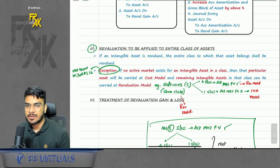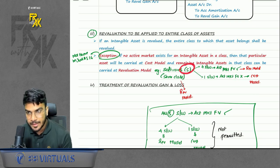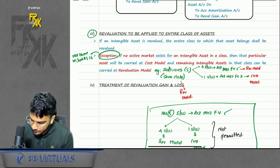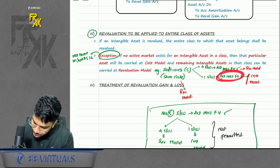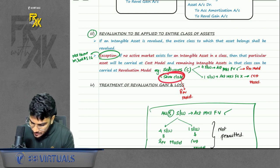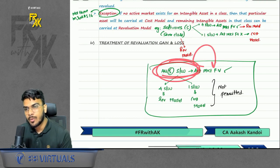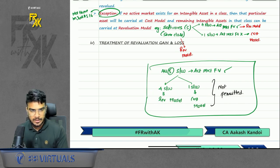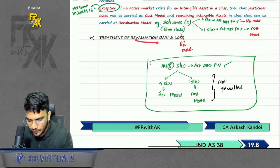There is one new exception point in Ind AS 38. Let's say for example I have five softwares and I want to follow the revaluation model. For four softwares I have active market fair value, but for one software I do not. For that software where I do not have active market fair value, I can follow the cost model, while for the remaining I can follow the revaluation model — within the same class itself. But if for all five softwares I had active market fair value, then bifurcated models cannot be allowed — all must follow one model. This was not there in Ind AS 16.